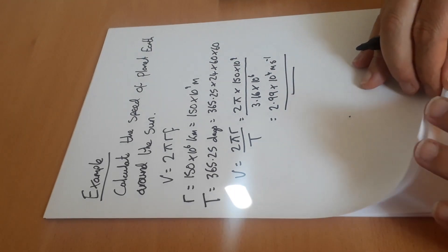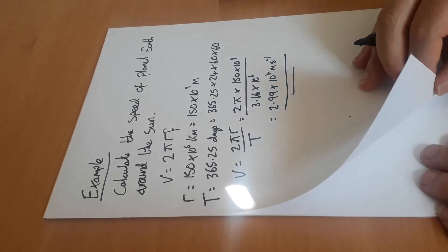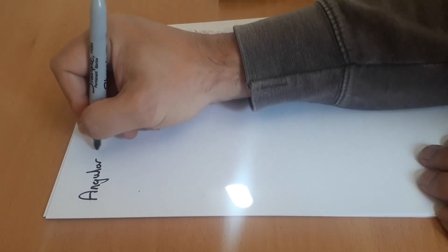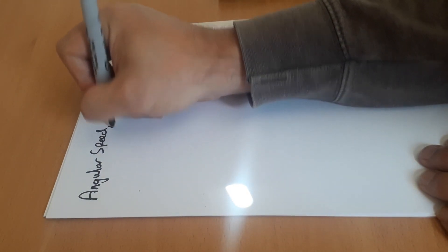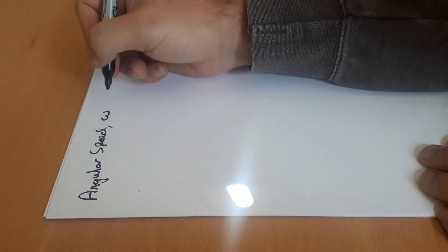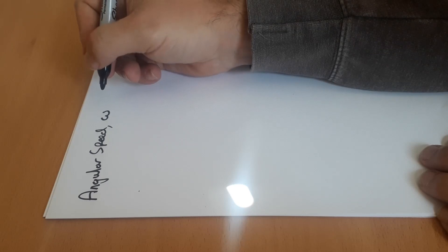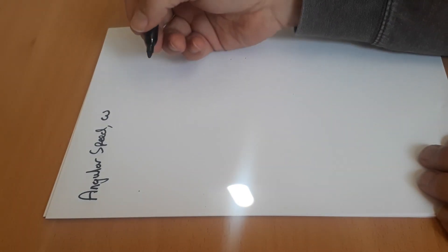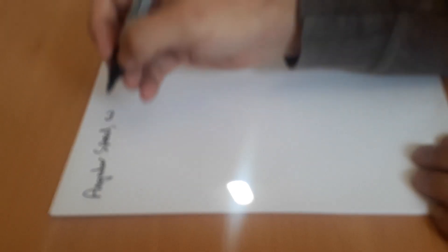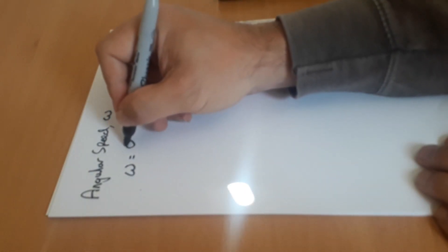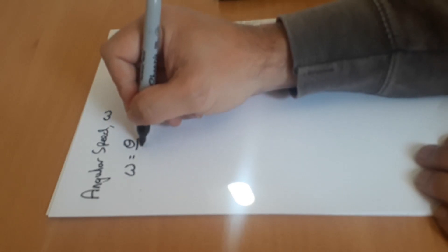Now the next thing we're going to look at today is angular speed, and this has the symbol omega. Now it's a little omega - capital omega is what we use for the ohm, but little omega looks like ω.